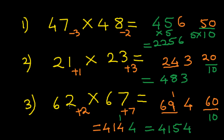Let's go through the steps again for 62 × 67. First we chose the base 60. We subtracted 62 from 60 to get plus 2, and 67 from 60 to get plus 7. We multiply 2 × 7 = 14, so we carry 1 and write 4. We add 62 + 7 = 69. We multiply 69 by 6 to get 414. Adding the carry, we get 415, and with the units digit 4, the final answer is 4154.